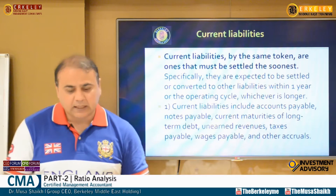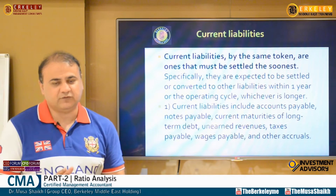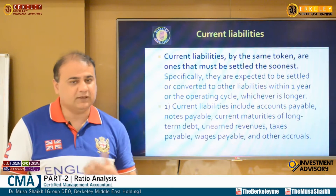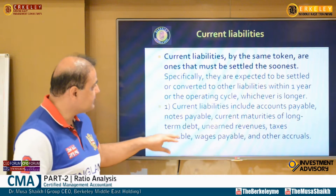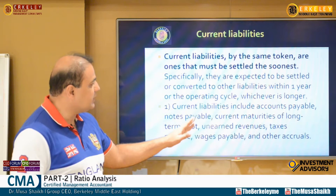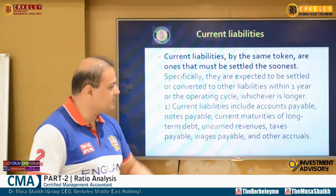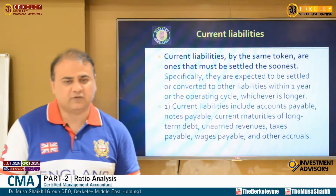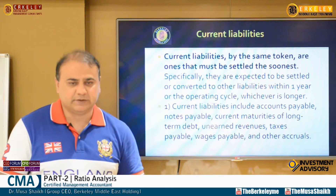Current liabilities are obligations you have to pay in less than one year. These include trade payables, other payables, taxes, short-term debt, the current portion of long-term debts, unearned revenue, tax payable, wages payable, and any other expense payables that must be settled within one year.